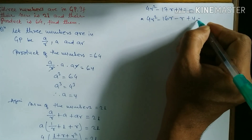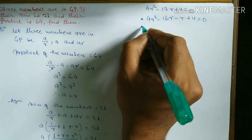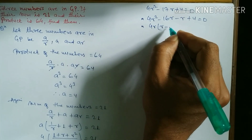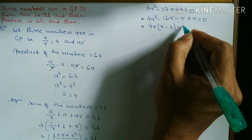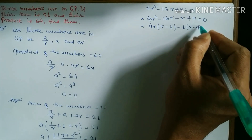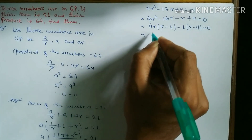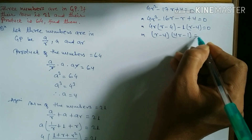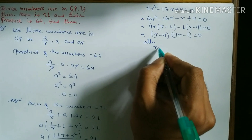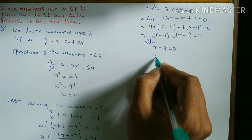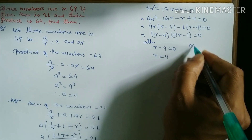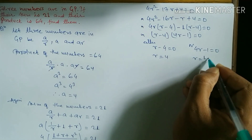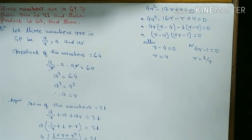Taking 4r common from the first two terms: 4r(r - 4), and 1 common from the last two: 1(r - 4) = 0. So (r - 4)(4r - 1) = 0. Either r = 4 or r = 1/4. We get two values of r and one value of a.